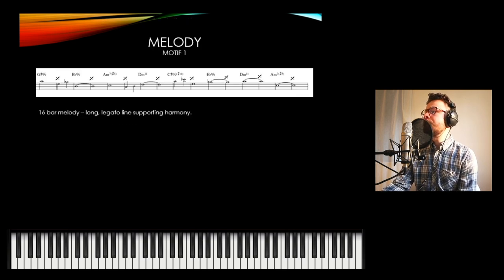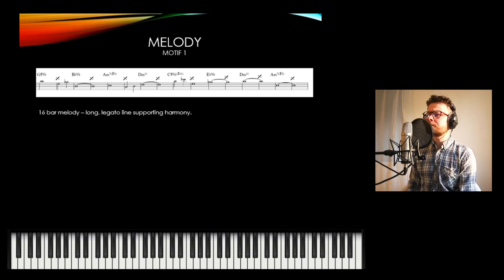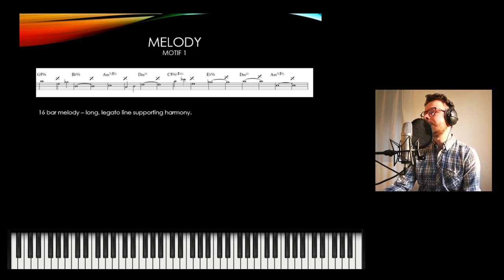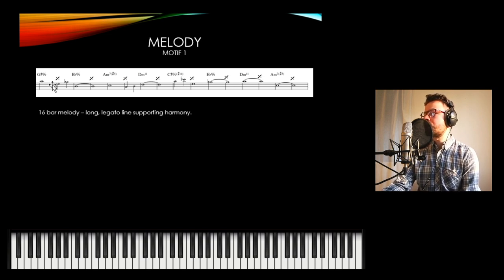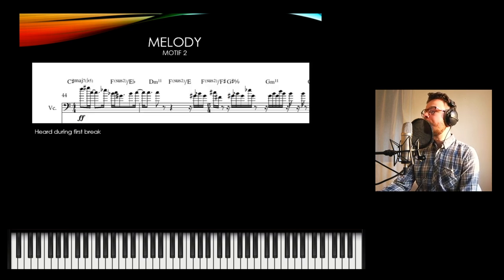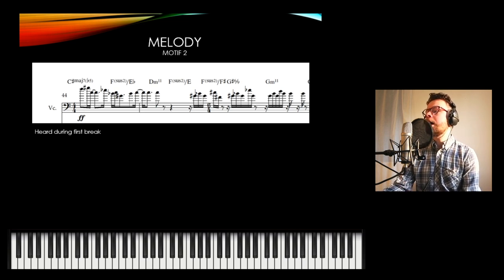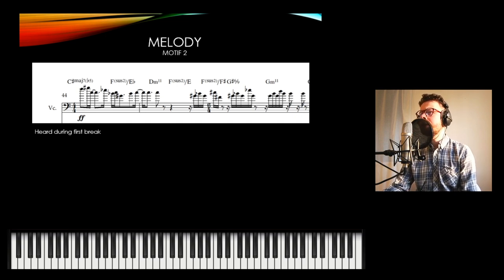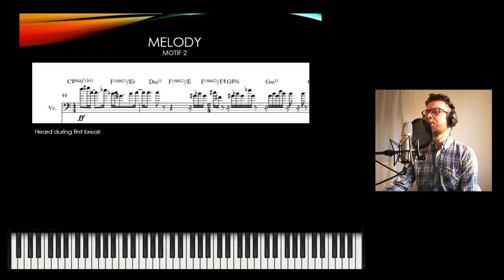Moving quickly on to melody. The melody in this piece is really just to support the harmony and the rhythm. The first melody features on cello — it's 16 bars long. There's no real sense of phrasing unless you reduce it over 16 bars, but you can kind of see a sense of phrase; otherwise it's just there to support the harmony and give a bit of texture and flavor. Unlike motif two, which has a little more rhythmic content and syncopation, and follows the groove a little bit better — though again, it just supports the harmony.